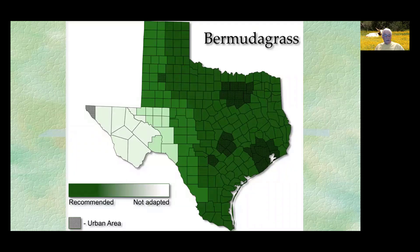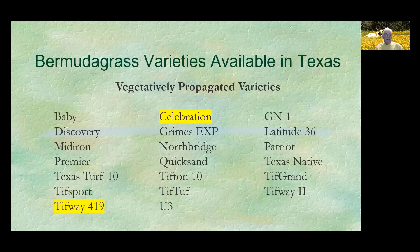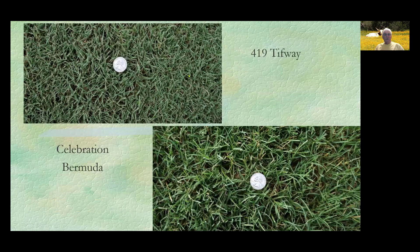Our next grass is Bermuda grass, also recommended for Williamson County. There are 20 different varieties for Texas — some are just used for golf courses, but many others are adapted for home lawns. The two used most in this area are the Tifway 419 and the Celebration. The Tifway has a dark green color, while Celebration is a little bit lighter green, so it depends on what you want and how much time you want to spend.